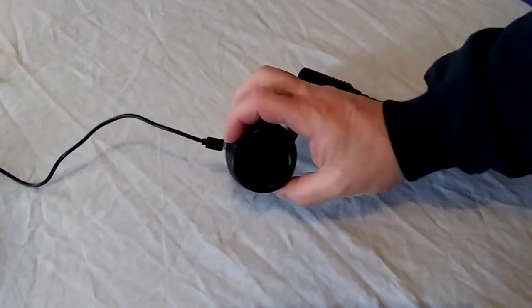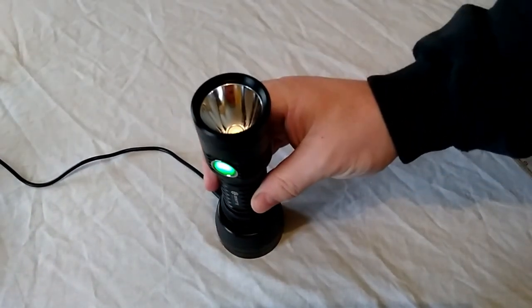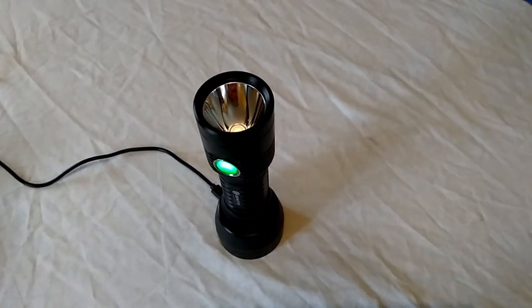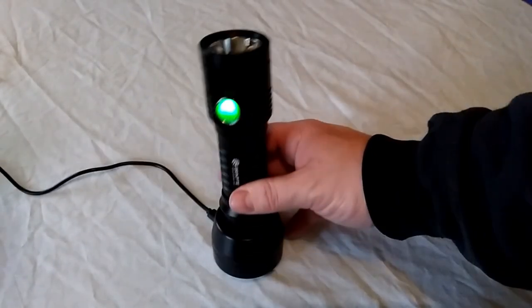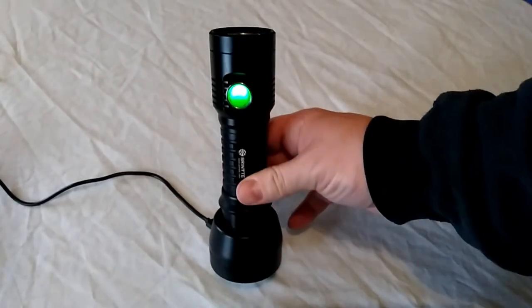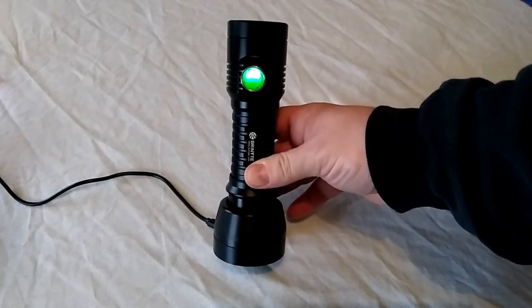That's the charger there. Just place that there and you just put the torch in. There it is charging. Proper wireless charging there.